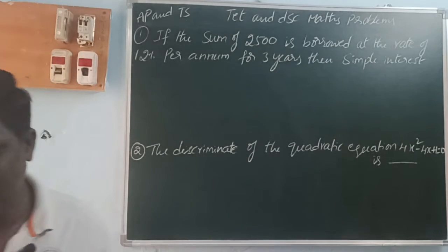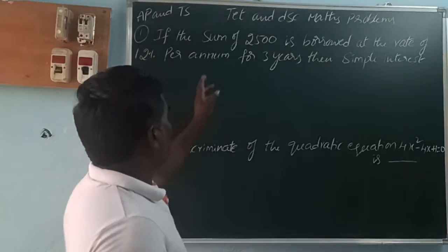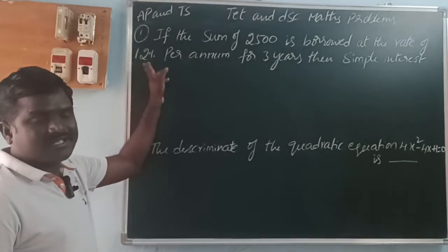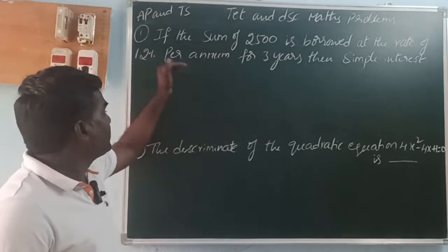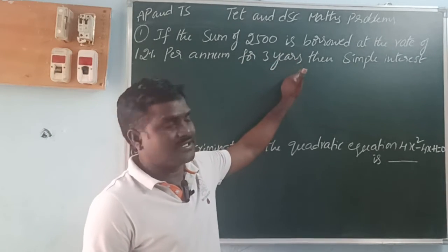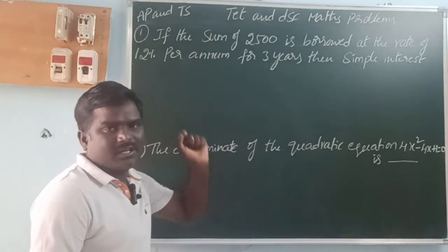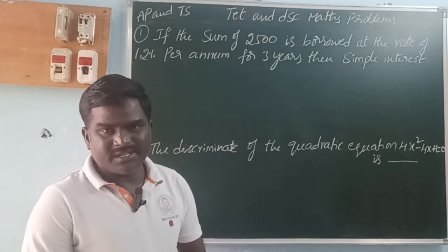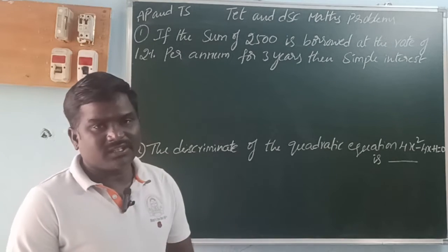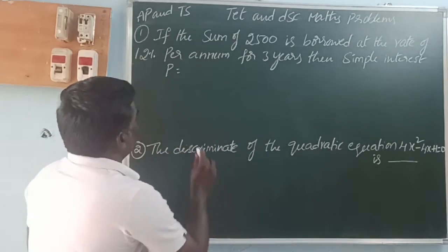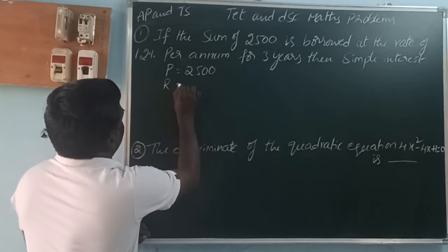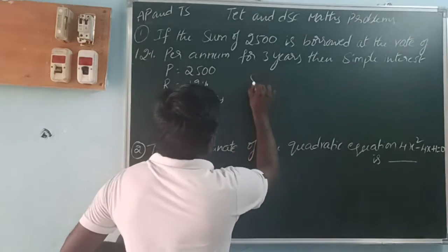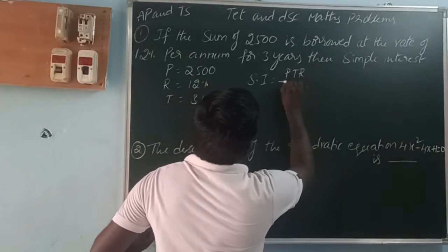First problem: the sum of two thousand five hundred was borrowed at the rate of 12 percent per annum for a time period of three years. Find the simple interest. So principal P is two thousand five hundred, rate of interest is 12 percent, time is three years. Simple interest formula is SI = PTR divided by 100.